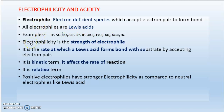What is electrophilicity? It is the strength of an electrophile — how the strength of an electrophile is compared. Electrophilicity is the rate at which a Lewis acid forms a bond with a substrate. The electrophile always attacks a nucleophile, or the nucleophile always attacks the electrophile to form a bond. So electrophilicity describes how fast an electrophile forms a bond with a nucleophile.